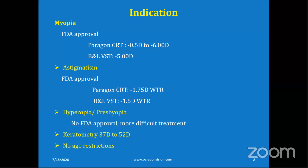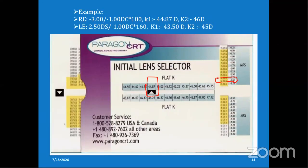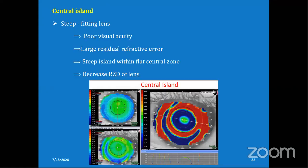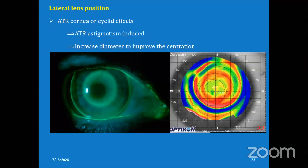The next question from Anam: in case of lateral decentration, we need to increase overall diameter to resolve it - is there any standard value for how much? There is no compulsory standard value. After increasing the diameter, it may not always center well. You also have to work with landing zone angle or return zone depth to achieve centration.